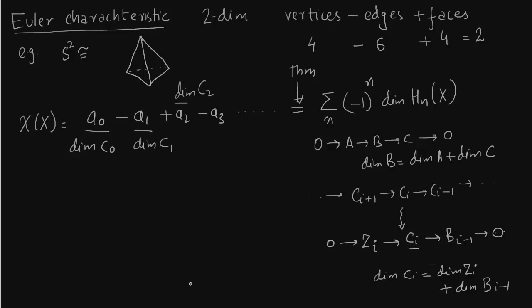So everything is clear here. Now we want to introduce the dimension of the homology group. So obviously homology group is nothing but Z_i over the boundary B_{i+1}. So we have to somehow relate this.